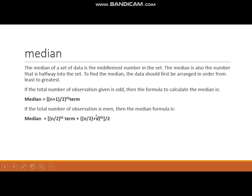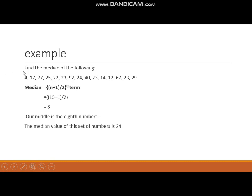But if N, the number of observations, is even, then we use a different formula. For example, find the median of the following data. We arrange the data in ascending order. After arranging, we look at the number of observations N, which is 15. Since N is odd, we use the odd formula. N equals 15, so our median is the 8th term, which is 24. So 24 is our median.